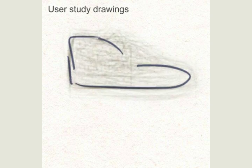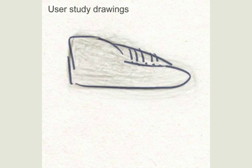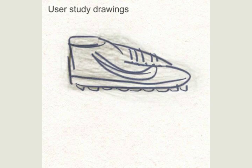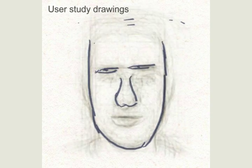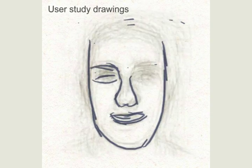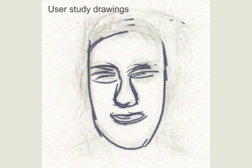These images contain a wide variety of objects such as bikes, faces, chairs, motorcycles, teddy bears, and butterflies.